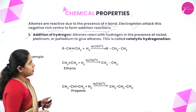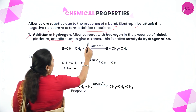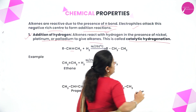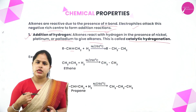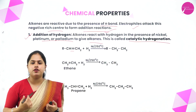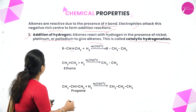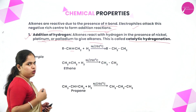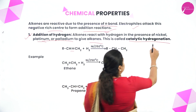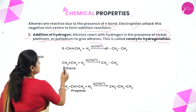Alkenes react with hydrogen in the presence of nickel, platinum, or palladium to give alkanes, and this is called catalytic hydrogenation. Platinum and palladium can be used as a catalyst at normal temperatures, but nickel should be used as a catalyst under high temperature. A general representation is given here: RCH=CH2, to which you add hydrogen in the presence of nickel at 250 degrees Celsius. If you are using platinum or palladium, you can just write Pt or Pd — no need to represent the temperature.